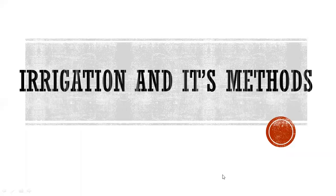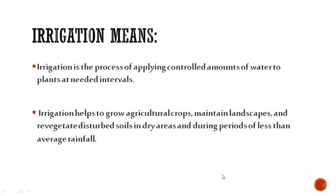What does irrigation mean? Irrigation is the process of applying a controlled amount of water to plants at needed intervals — to provide water to the crops or farms in a very controlled amount, as much water as the crop needs, at different time intervals.